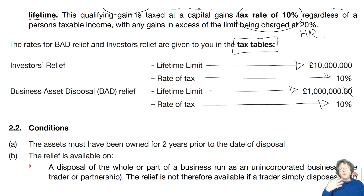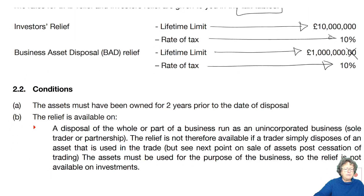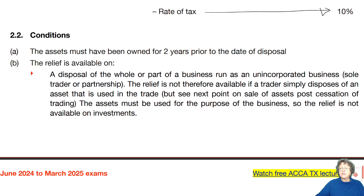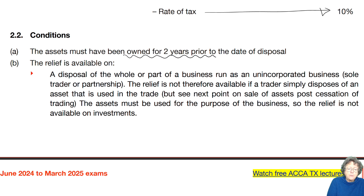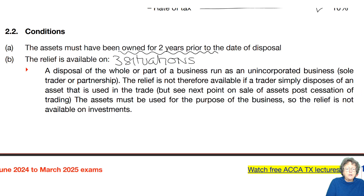In order to qualify, the gains had to be qualifying gains. What are the conditions we need to make sure exist before we can claim this relief? The main conditions: you must have owned the asset for at least two years prior to the date of disposal. There are three situations where, if you've owned it for two years, you can have that relief.